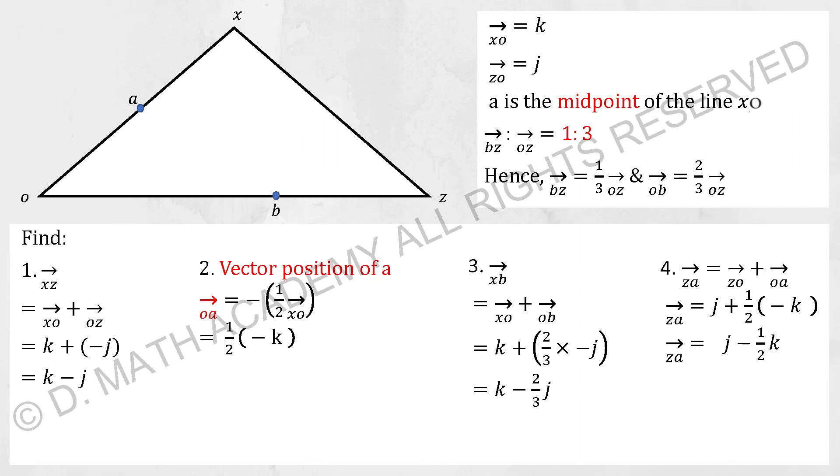Moving on, we have a vector question here. XO equals to K and ZO equals J. So the direction of the symbol is very important. You need to follow it truly because going the other way around to add negative into it. A is a midpoint of line XO and BZ to OZ is 1 to 3. Hence, BZ is actually 1 over 3 of OZ and OB is 2 over 3 of OZ.